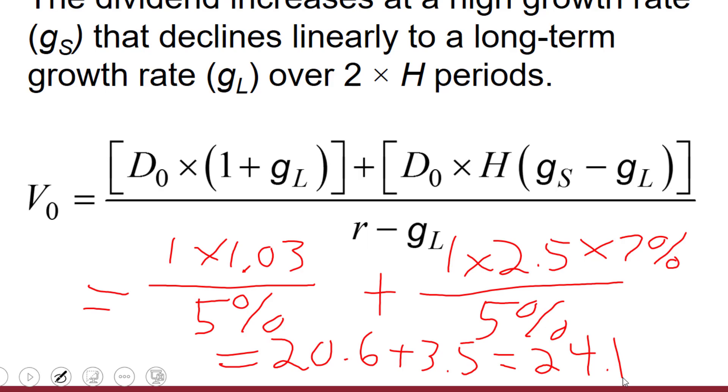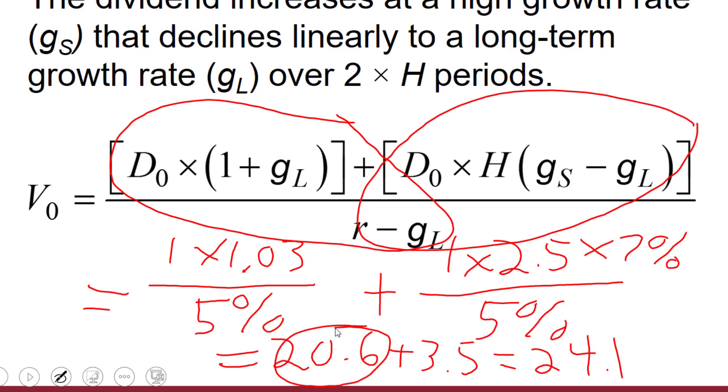So what's interesting about this? I would like to just show you the insight into this particular model. What's really cool about this model is that this first term right here tells you what the value would be if you did not have that period of high growth. And then the second term over here, that is going to give you the additional value of that high growth. So if you never had this period of high growth, the intrinsic value of the stock would be 20.6. But because you have that high period of growth, you have an additional worth of 3.5, and it gets you to this final value of 24.1.